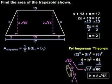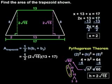Now to find the area of the trapezoid, since the height is 2 root 15, base 1 is 13, and base 2 is 17, we can plug this information into our formula to get 1 half times 2 root 15 times parentheses 13 plus 17.